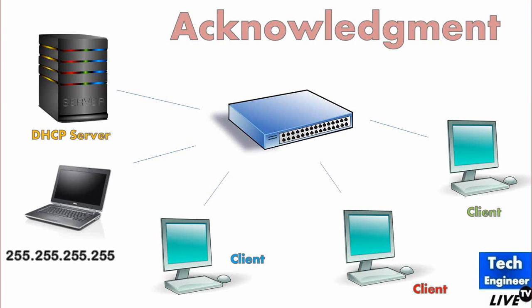When DHCP sends a packet back to the client, the source port number is 67 and the destination port number is 68. So any time a computer connects and sends a packet to the server, the source port is 68 and the destination is 67, and in the reverse direction it is 67 to 68.